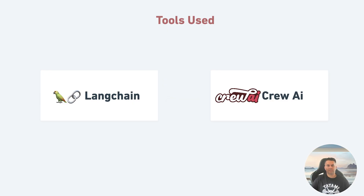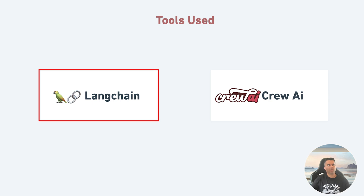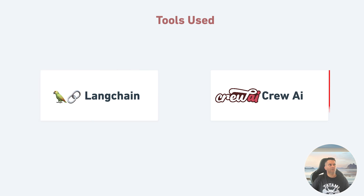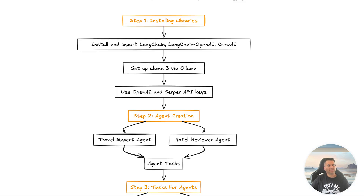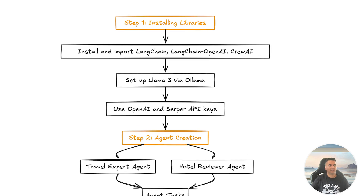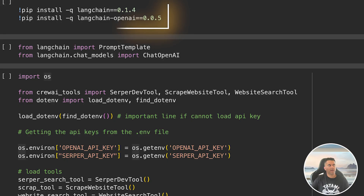First, let's talk about all the tools we will be using. LangChain — if you've been following my channel, you'll know that this is one of the best frameworks for building projects with AI models. We'll also be using CrewAI, which is a powerful agent framework. We start by installing the required libraries: LangChain, LangChain OpenAI, and CrewAI.